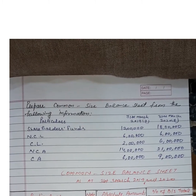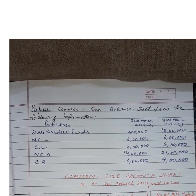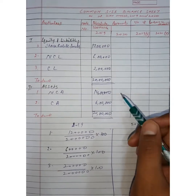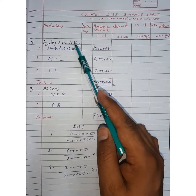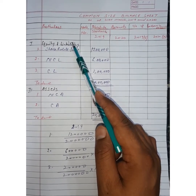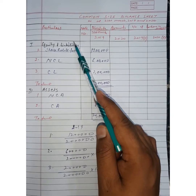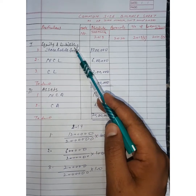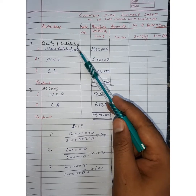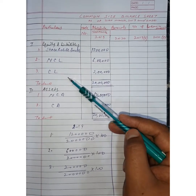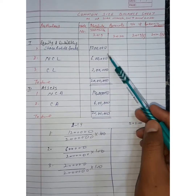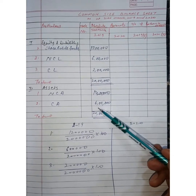इसे हम एक example से समझने की कोशिश करते हैं। Firstly, format में arrange करेंगे — मैंने यहाँ arrange किया हुआ है। Particular column, according to Companies Act 2013 के according arrange किया जाएगा। Equity and liabilities में shareholder fund, non-current liability, current liability, total assets, non-current assets — previous year के data को यहाँ arrange किया है।